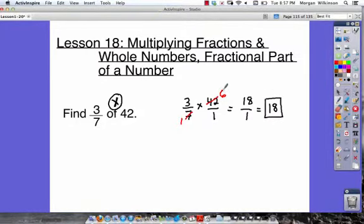Simplifying before we multiply made it much easier, because otherwise, we would have had to say 3 times 42, and then divide that answer by 7, which would have come out to be 18. Either way, we get the answer right, because 18 is 3 7ths of 42. Let's move on to our next example.